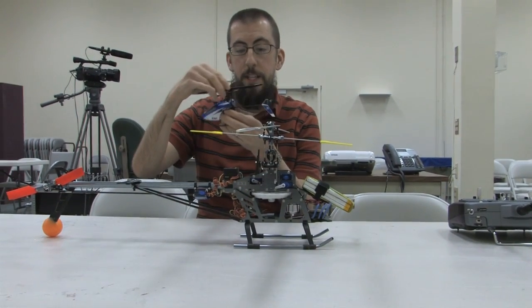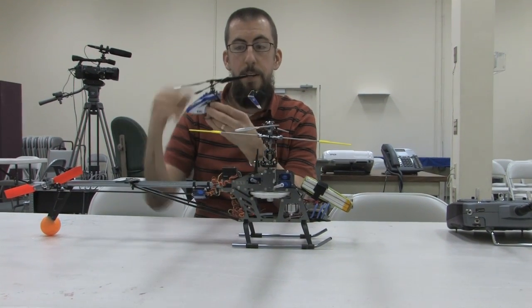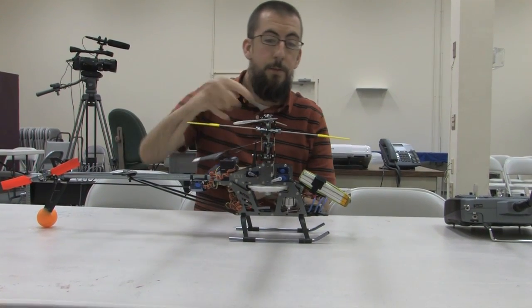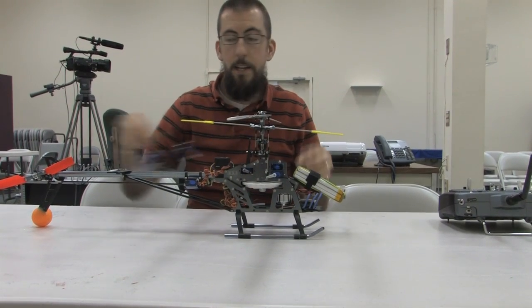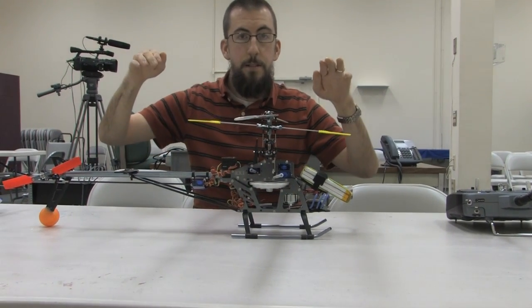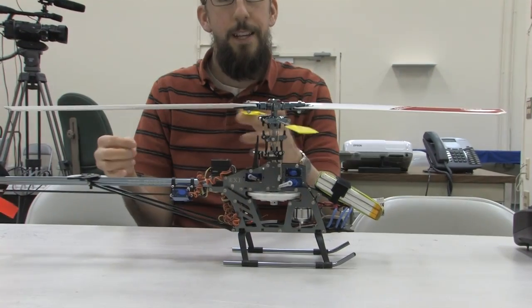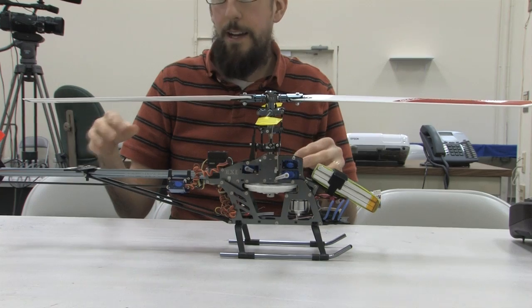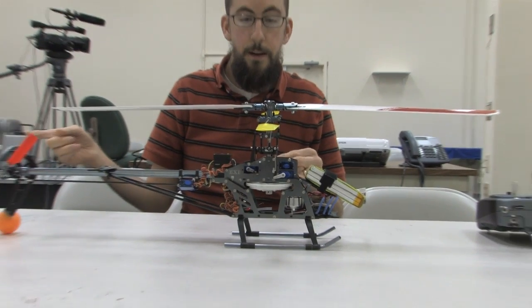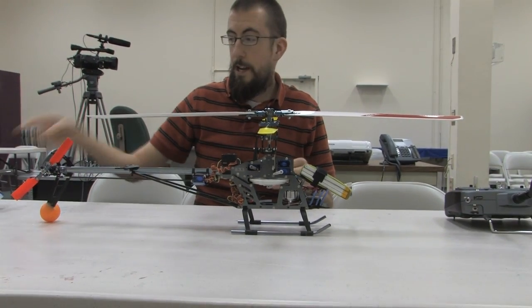With this helicopter, it was fixed pitch, so the way we made it go higher is by spinning the rotors faster. This one doesn't work the same way. This one, the rotor head's speed remains constant, and what changes is the blades can change pitch. This one handles a lot differently because it's a collective pitch system, as opposed to the fixed pitch, which is like the little one.